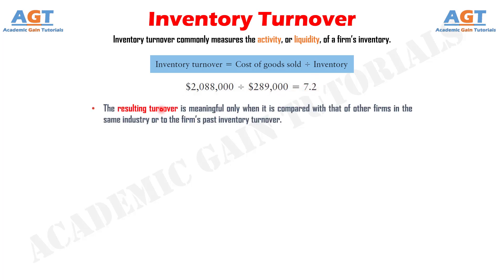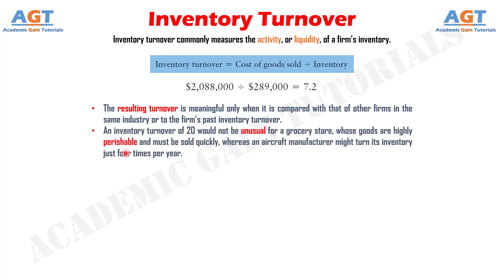The resulting turnover is meaningful only when it is compared with that of other firms in the same industry, or to the firm's past inventory turnover. An inventory turnover of 20 would not be unusual for a grocery store, whose goods are highly perishable and must be sold quickly, whereas an aircraft manufacturer might turn its inventory just 4 times per year.